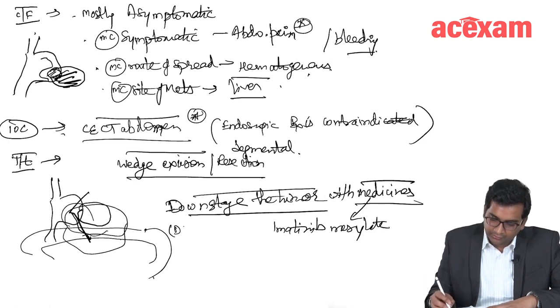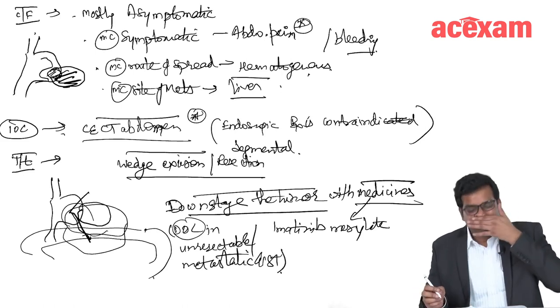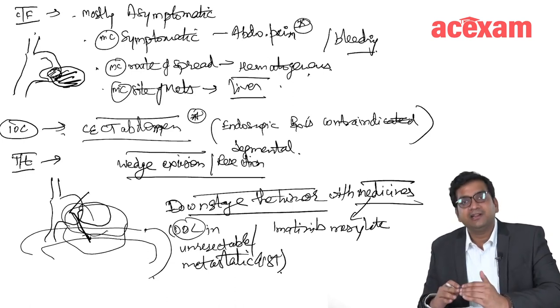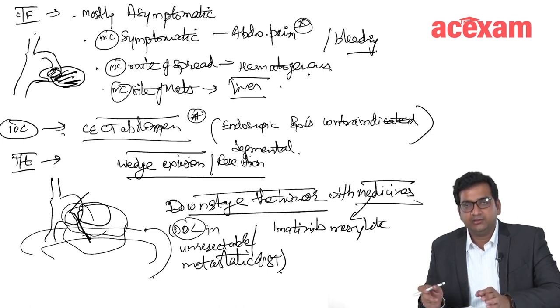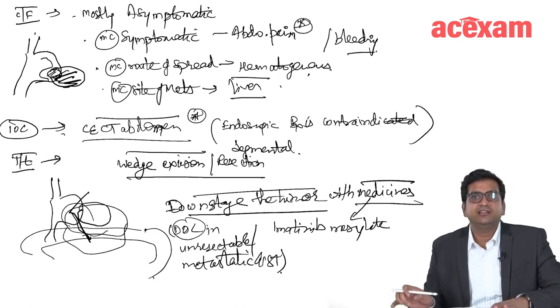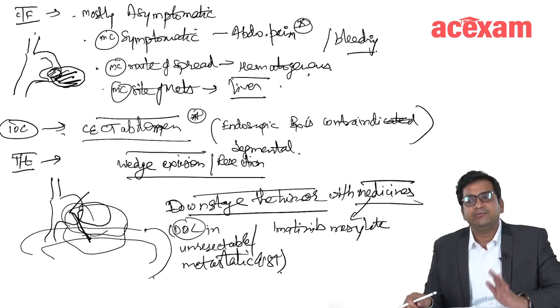Imatinib mesylate is the drug of choice in unresectable or metastatic GIST. After wedge excision or segmental resection, if there are high-risk features on pathology, then we will give imatinib mesylate to decrease the chances of recurrence. Generally, imatinib is prescribed for 5 years after surgery. There is less data on 5 years. Few centers prescribe for 3 years, few for 5 years. It is generally prescribed if there is a large size of tumor or presence of more number of mitoses based on pathology findings.